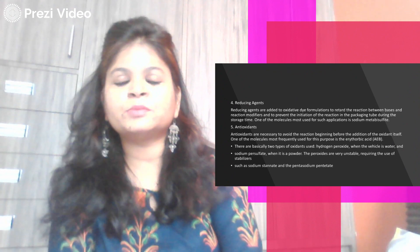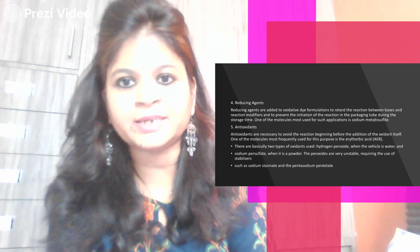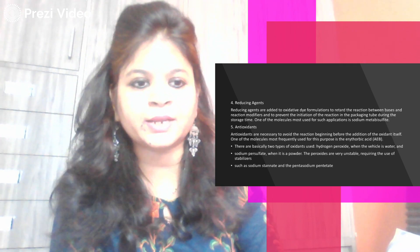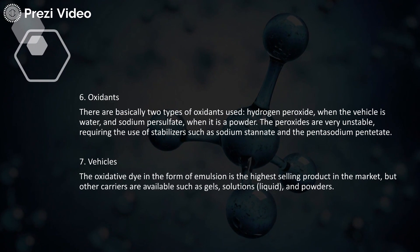The oxidants used are hydrogen peroxide when the vehicle is water, or sodium persulfate when it is a powdery substance. The oxidative dye in the form of an emulsion is the highest-selling product in the market, though it is also available in other forms such as gels, solutions, and powders. The most widely prevalent form remains the emulsion.